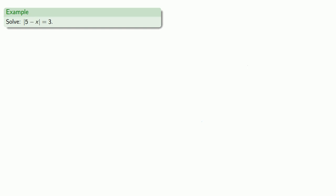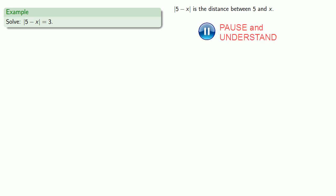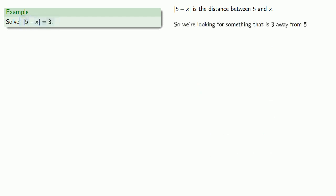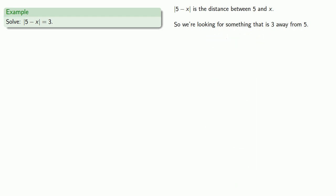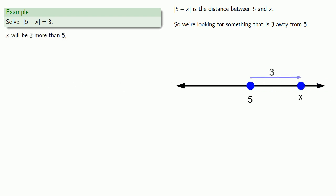How about the absolute difference between 5 and x equals 3? The absolute difference between 5 and x is the distance between 5 and x on the number line. The equation says that distance is 3, so we're looking for something that's 3 away from 5. But that's what we just did — x will be 3 more than 5 or 3 less than 5. So x equals 2 or x equals 8.